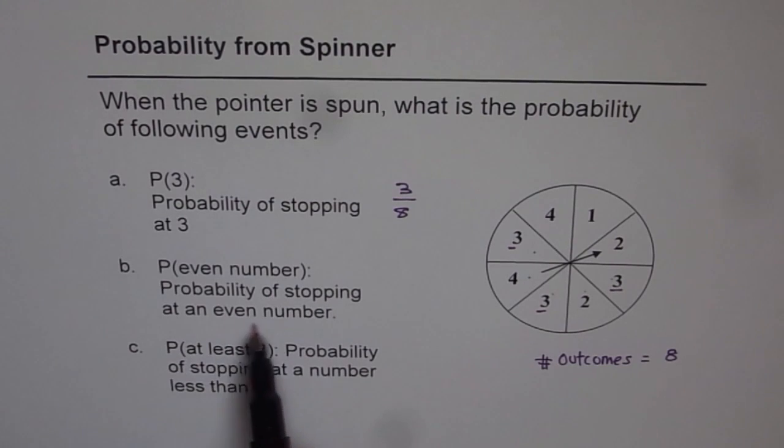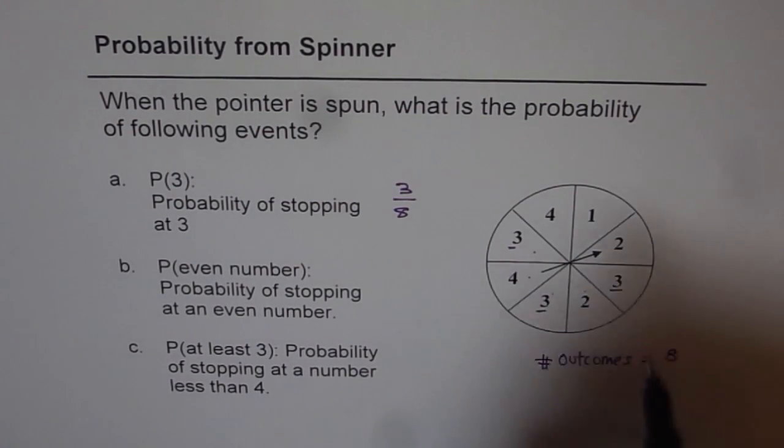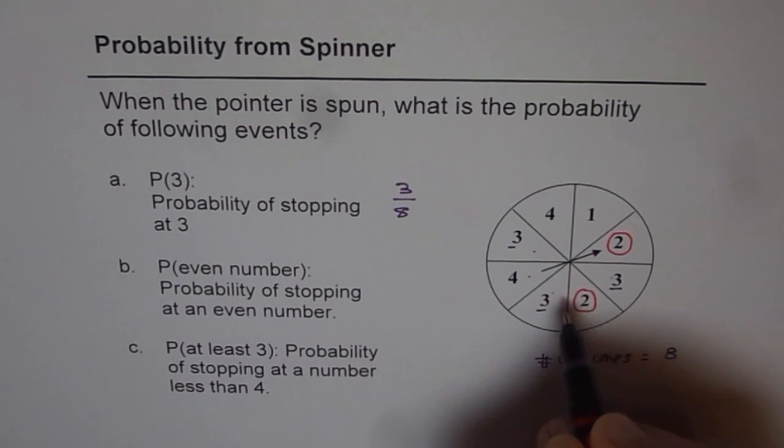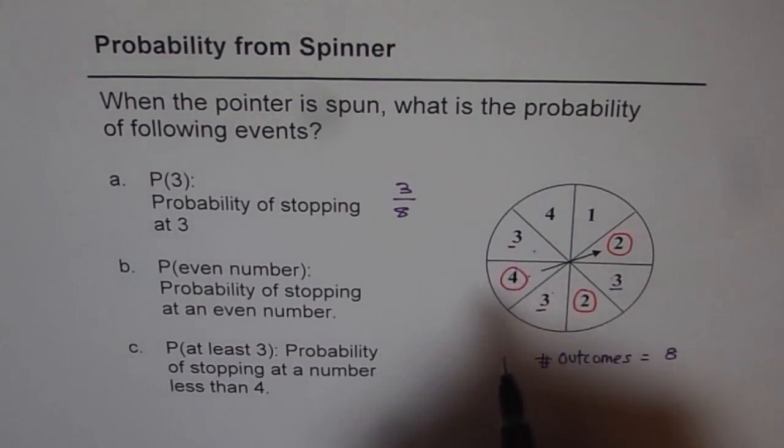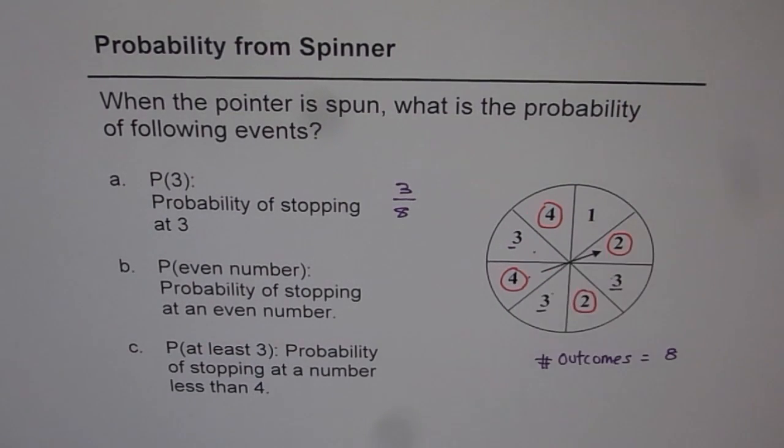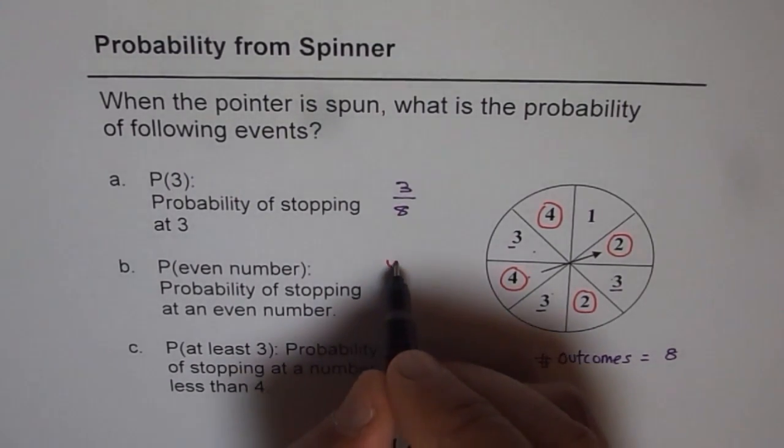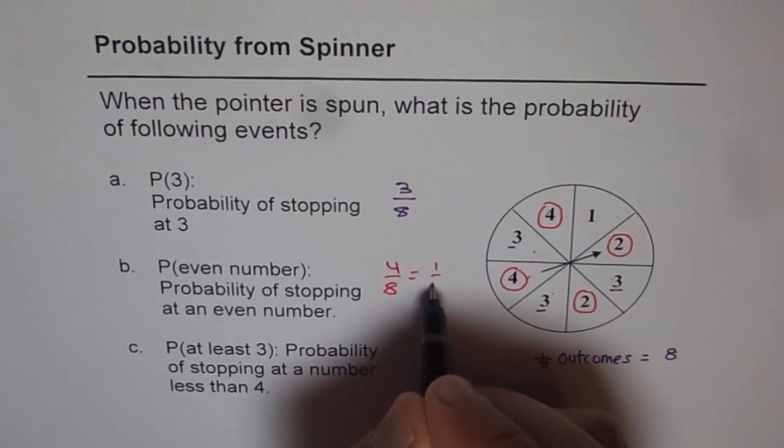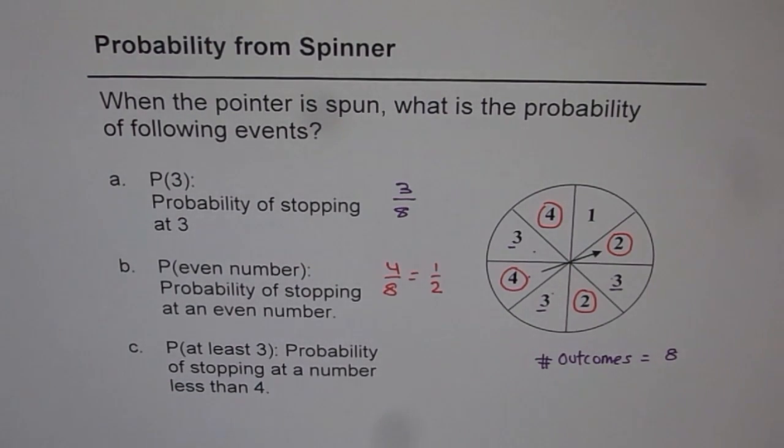Probability of stopping at an even number. How many even numbers do we have? So even numbers are 1, which is 2, 2, another even number, then 4 is an even number. So we got 1, 2, 3, 4 even numbers out of 8. So this probability is 4 out of 8, which you could simplify and write this as dividing both by 4 as half or 50 percent.